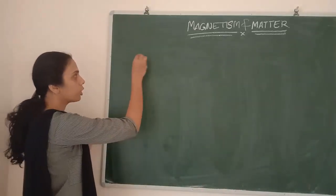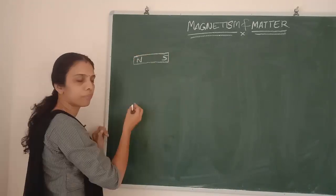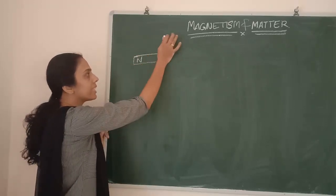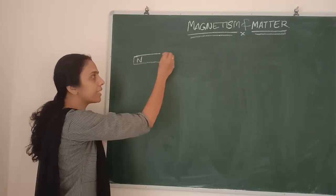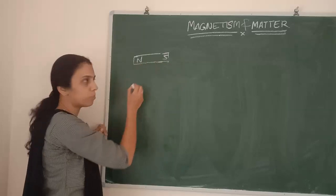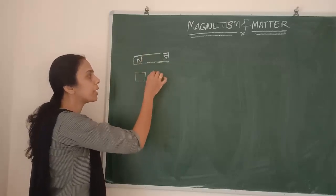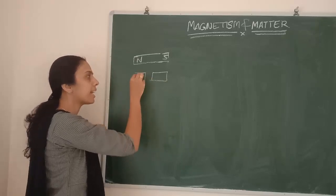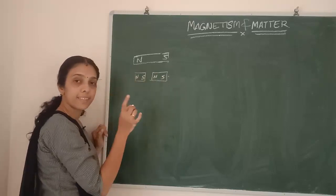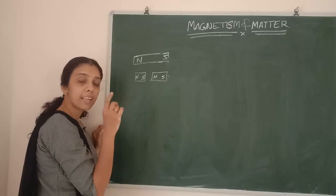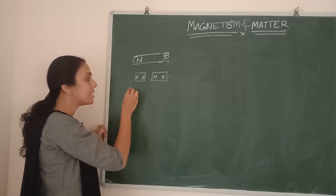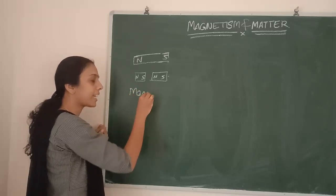A Magnet will be having a North Pole and a South Pole — two poles, North and South. As a single pole, it won't exist. If we are taking a small Magnet also, it will be having these two poles, North Pole and South Pole. If I am dividing this Magnet into two, again that part will become a North and South Pole. So Magnetic Monopoles won't exist.